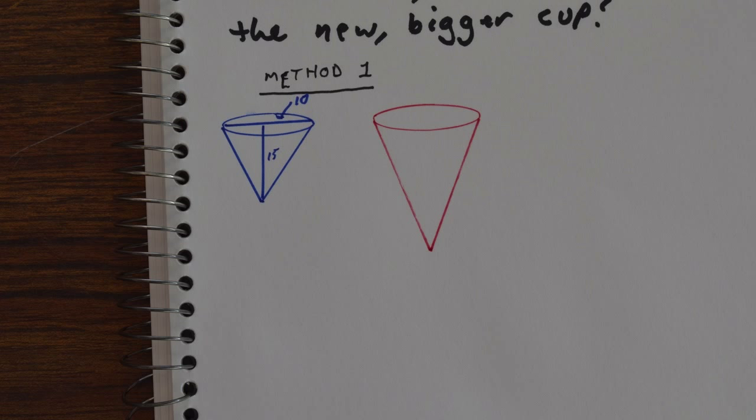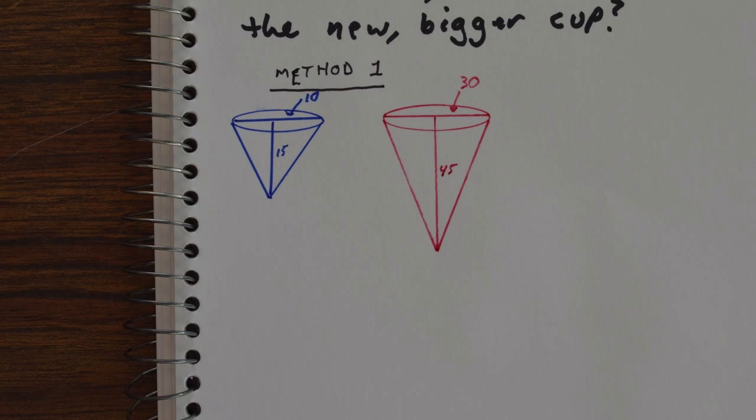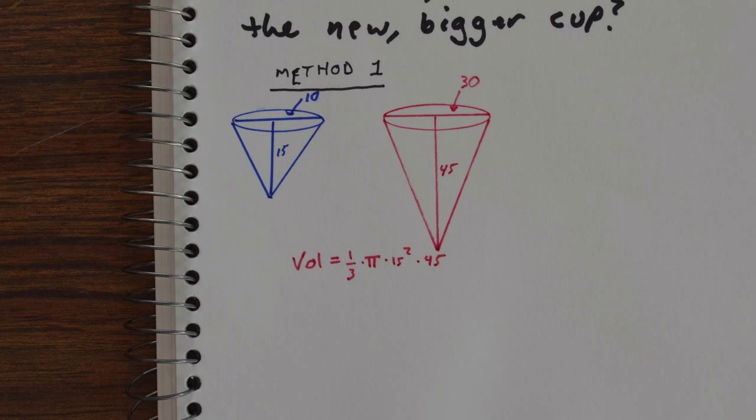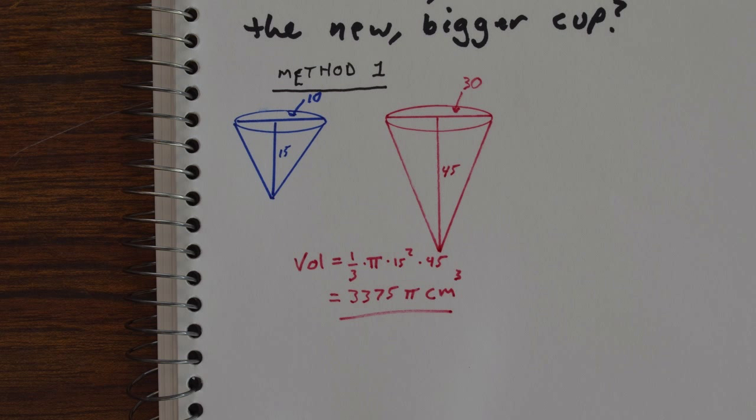So the first method is just figure out what that bigger cup looks like. We have our smaller cup and our bigger cup. The original cone had a diameter of 10 and a height of 15, and if you take and triple all those measurements, then the diameter is now 30 and the height is now 45. And so the volume of the red cone will be one-third pi r squared h, which is 3,375 pi cubic centimeters.